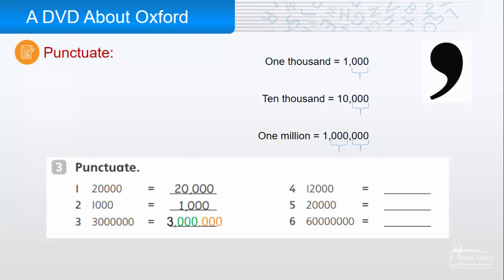Number three. Three million. So, one, two, three, comma. One, two, three, comma. Four, twelve thousand. Five, twenty thousand. And six, sixty million.